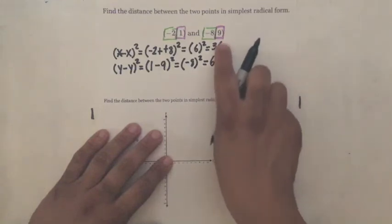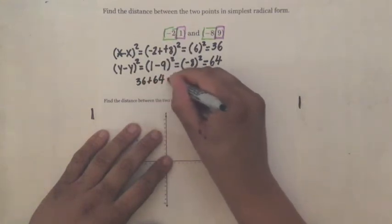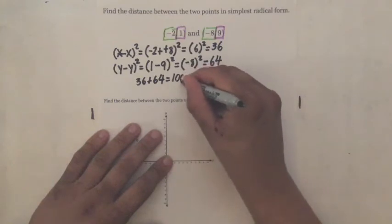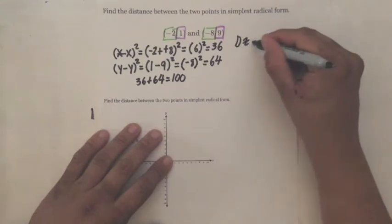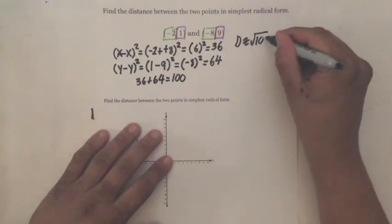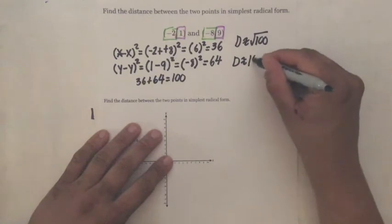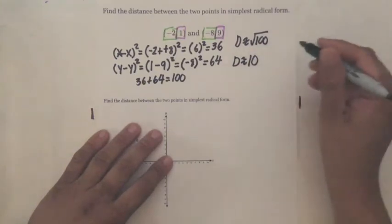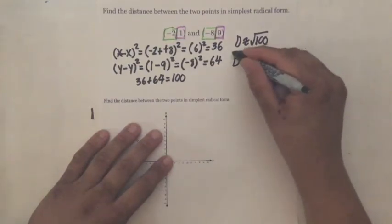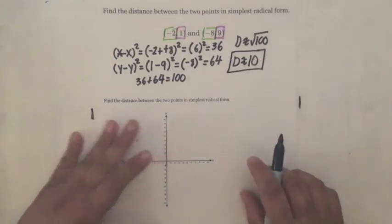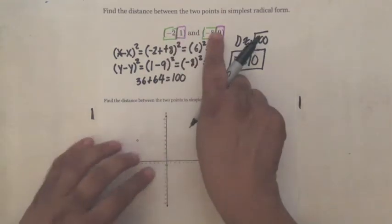Then we add these two numbers. So we say 36 plus 64 is equal to 100. Then finally, the last step, D distance is approximately the square root of 100. That means the square root of 100, distance is approximately 10. What two numbers multiplied by themselves is 100? The answer is 10. So D is approximately 10, the distance between this point A and this point B.